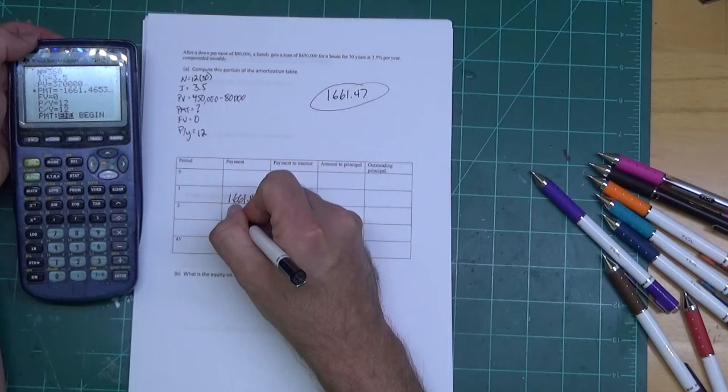For this one we're doing a 30-year mortgage and we're compounding monthly, so P over Y is going to be 12, and this would be 12 times 30. I'm going to put 12 times 30 right there. It says 3.5 percent, so my interest rate is 3.5. My present value - this is going to be the amount of the loan, and we borrowed 450,000 with the down payment of 80, so this is going to be 450,000 minus 80,000.